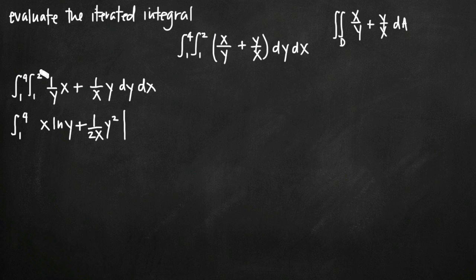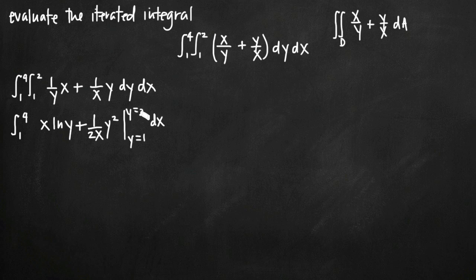An important thing to remember: it's confusing because we have both x and y variables. But since we just integrated with respect to y — dy was on the inside — these inner limits of integration relate to y. We're going to be plugging in 1 and 2 for y, not for x. I like to write y equals 1 and y equals 2 so I don't accidentally plug in for x.